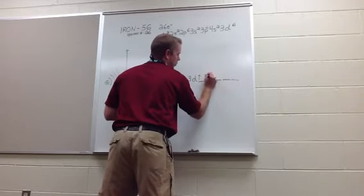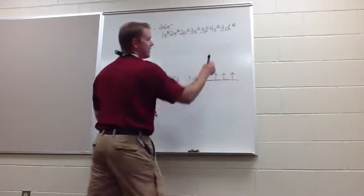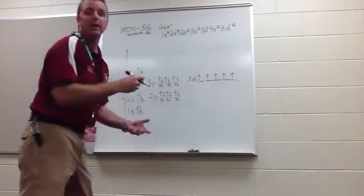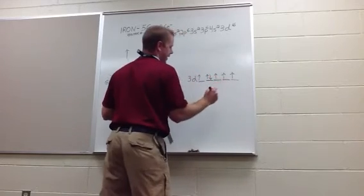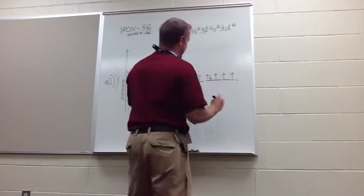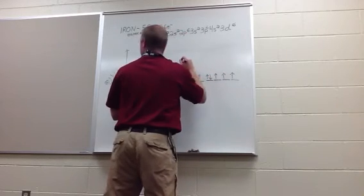1, 2, 3, 4, 5. And then this 6th electron, we can put it anywhere we want. So I'm going to choose to put it right there. So how many unpaired electrons do I have? 1, 2, 3, 4 unpaired.